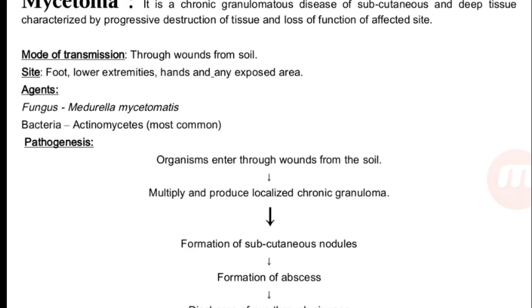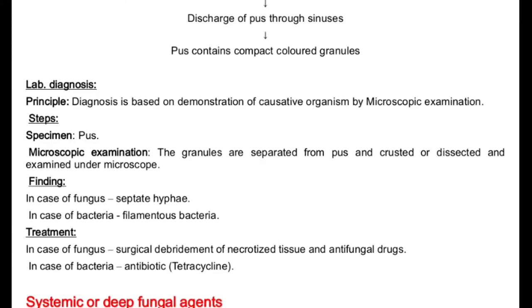Agents: in case of fungus, it is Madurella mycetomatis; in case of bacteria, it is Actinomycetes — the most common. Pathogenesis: organisms enter through the wound from the soil, multiply, and produce localized chronic granuloma, formation of subcutaneous nodules, then formation of abscess, discharge of pus through the sinuses. Pus contains compact colored granules.